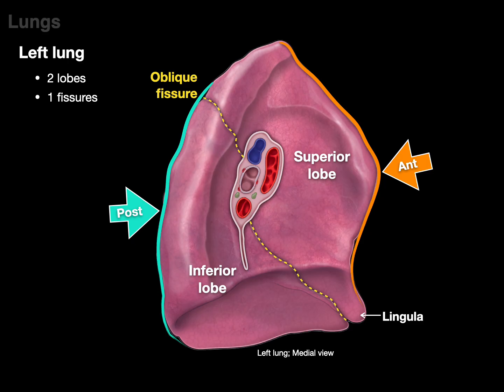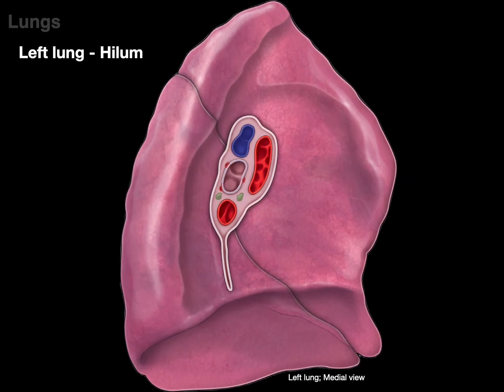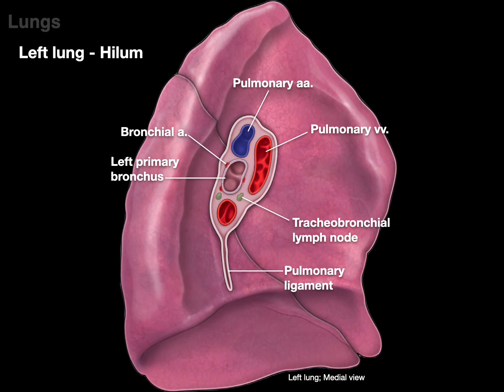The hilum of the left lung has the left primary bronchus with its bronchial arteries. The pulmonary arteries on the left are typically on top of the bronchus. Then there are the pulmonary veins — shown in red because they're delivering oxygenated blood back to the heart — along with tracheobronchial lymph nodes and the pulmonary ligaments.